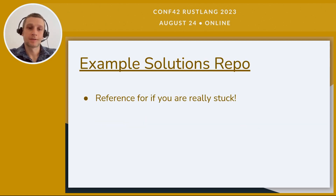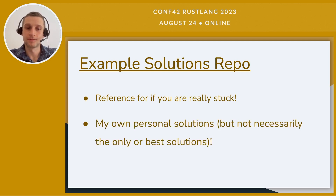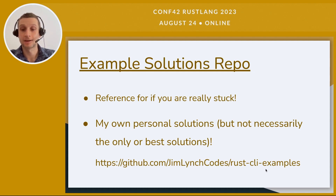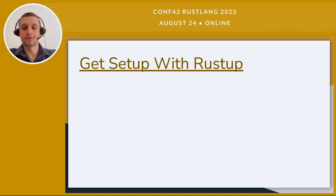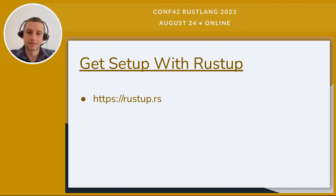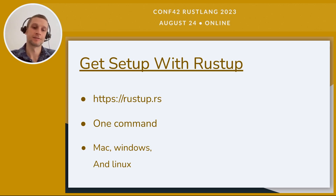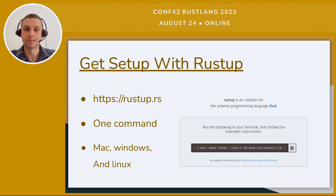I also put together some example solutions — my own personal solutions, not necessarily the only ones or the best ones — and you can find those at github.com/gymlunchcodes/rustcliexamples. For people who are totally new to Rust, getting started is really awesome because we have Rustup, found at rustup.rs. Just one command, works on Mac, Windows, and Linux, and it will install Cargo, the compiler, everything you need for developing in Rust.